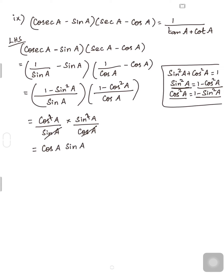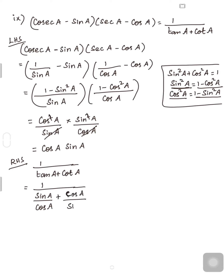The LHS gives cosA·sinA. Since I am not getting the result in terms of tan and cot directly, I will take the RHS and prove both sides separately. RHS is 1/(tanA + cotA). I write tanA as sinA/cosA and cotA as cosA/sinA. Taking the LCM for the denominator gives (sin²A + cos²A)/(cosA·sinA).